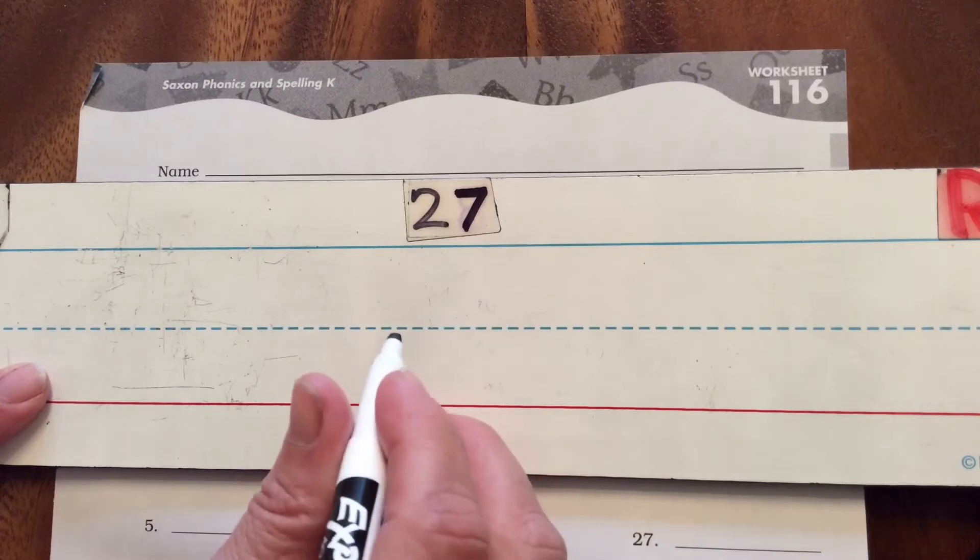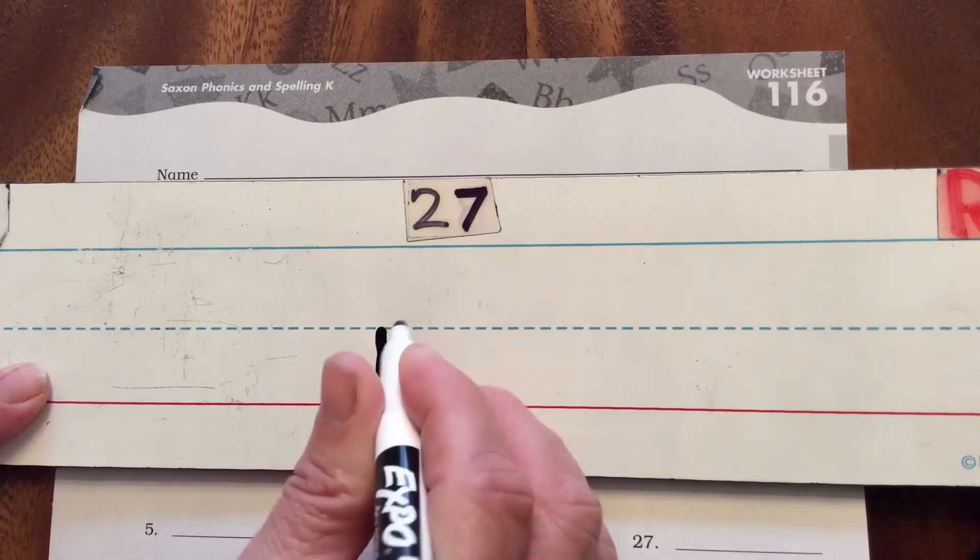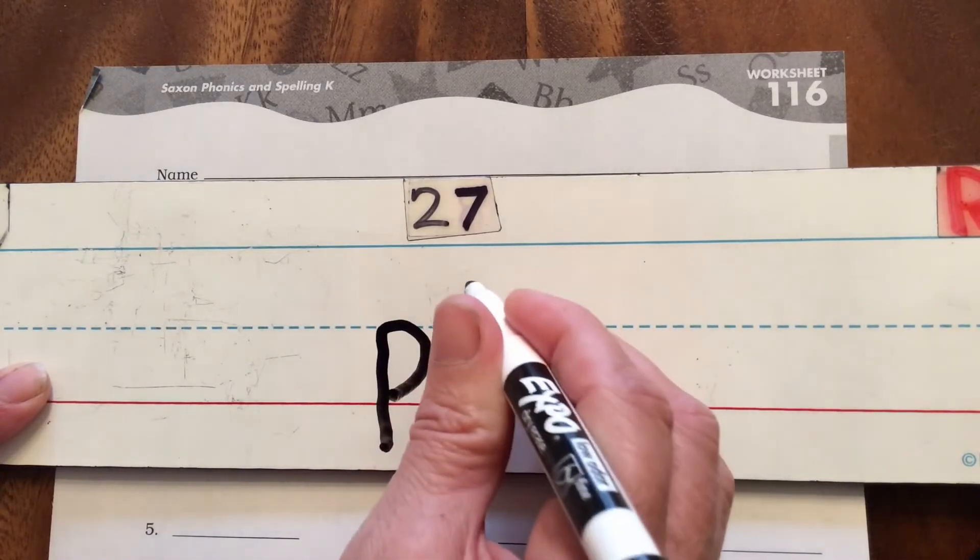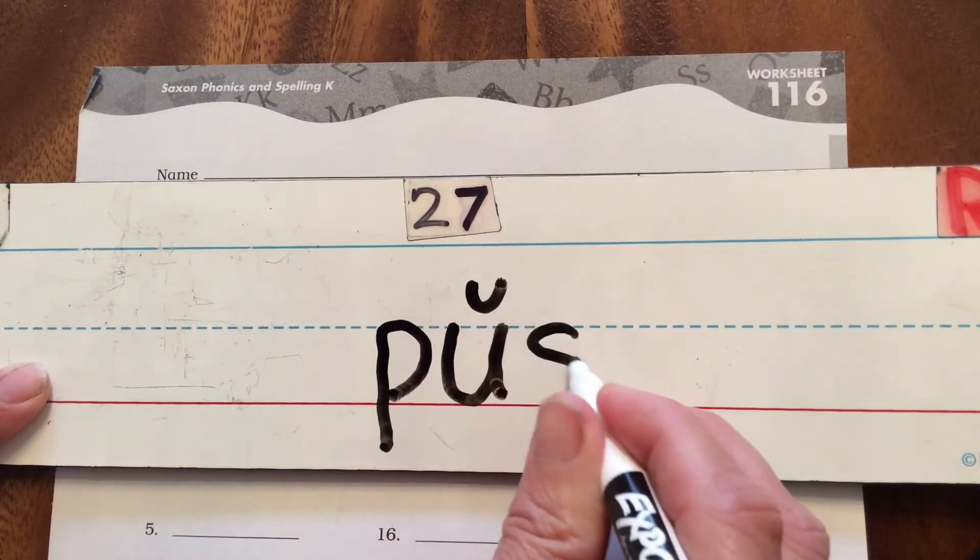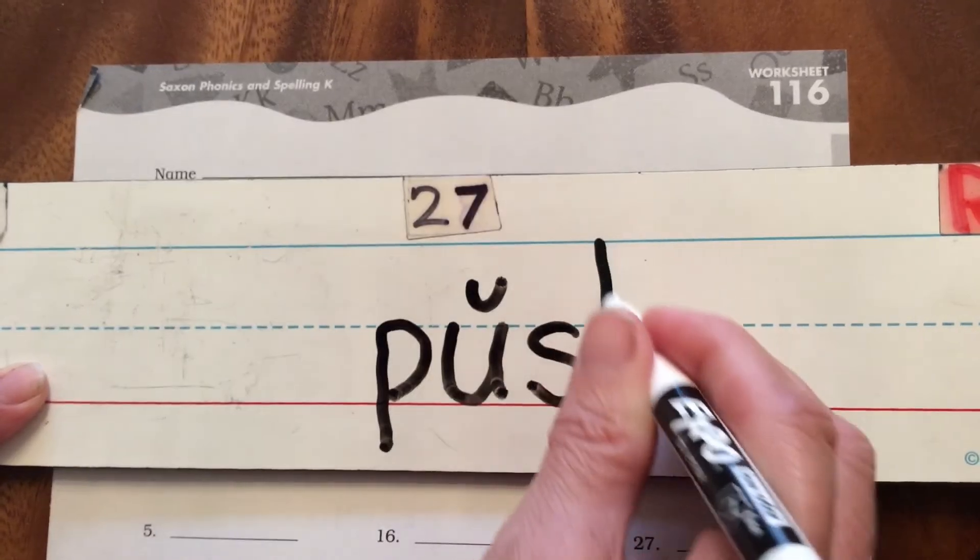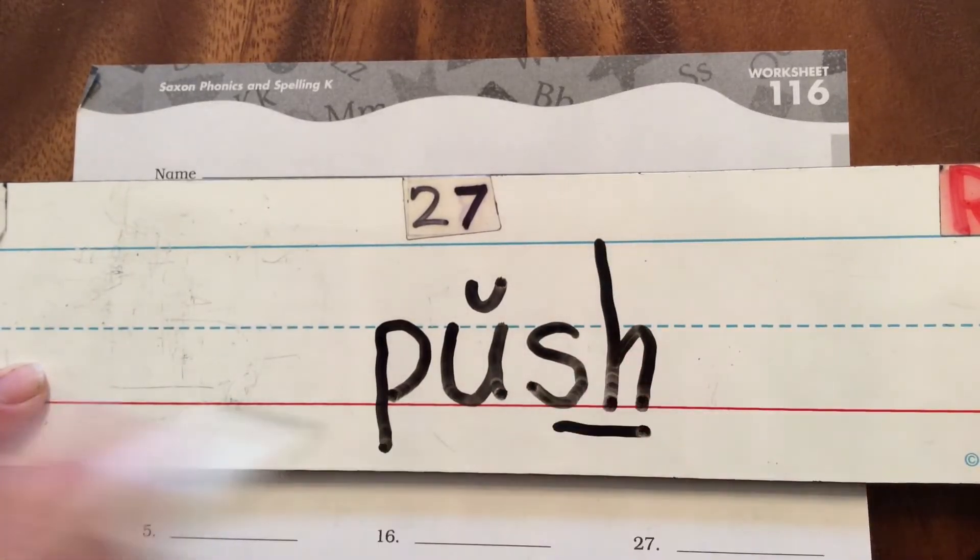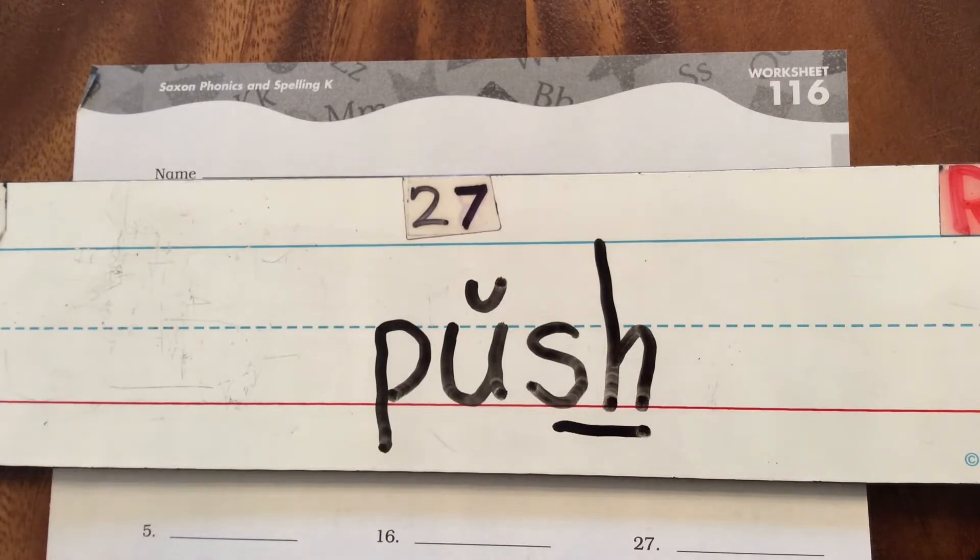So we're gonna try this one. I have P and I have a short U, and then I'm gonna put our new digraph sh on the end. Push, that would be push.